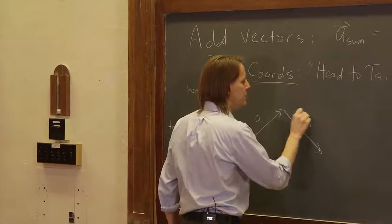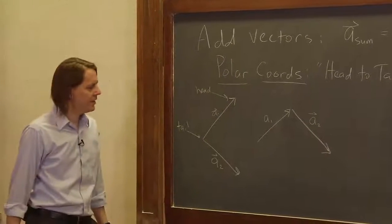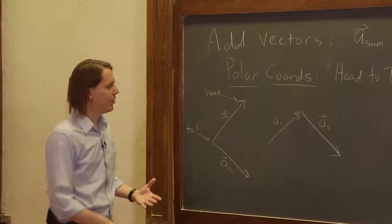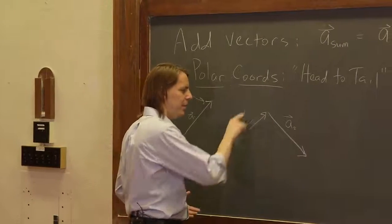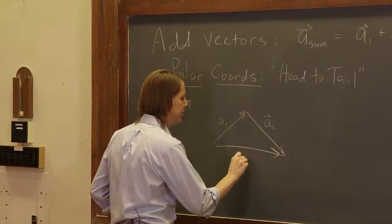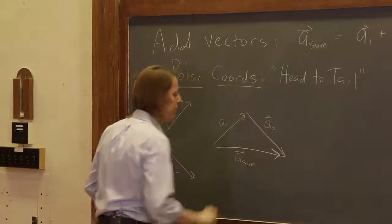Anyway, there's a1, there's a2, head to tail. And then the final step is to draw the sum vector from the first tail to the second one's head. So there is a sum, like that.